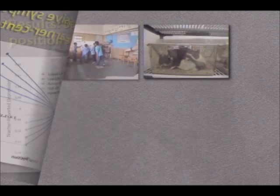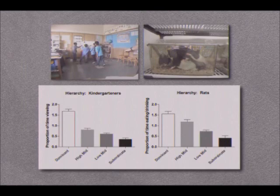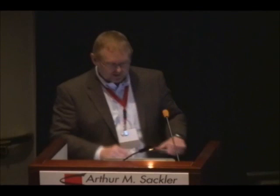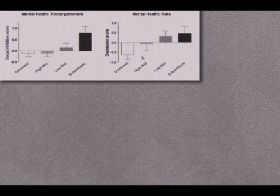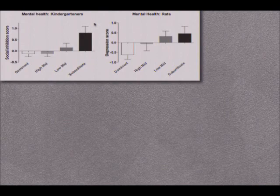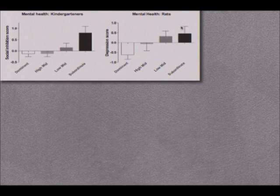With regard to the experimental data, we first confirmed that in both the human and rat versions of competition for a scarce resource, there was a gradient of proportion of viewing time among dominant to subordinate children, and a corresponding gradient in proportion of time eating chocolate or drinking water among the rats. We found that subordinate children had higher levels of social inhibition, tapering down over dominant children, and subordinate rats had higher depression scores derived from a learned helplessness paradigm.